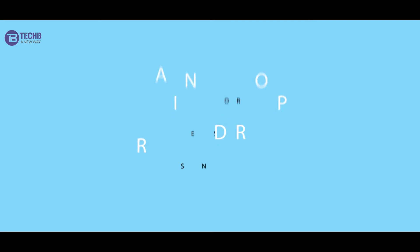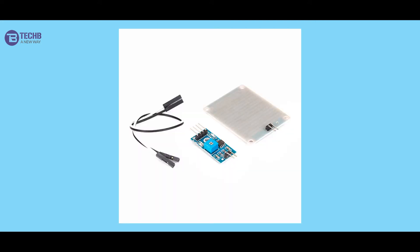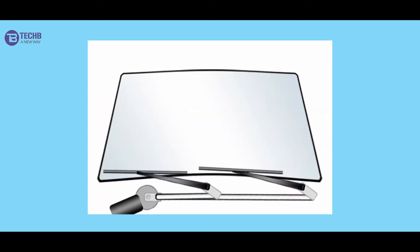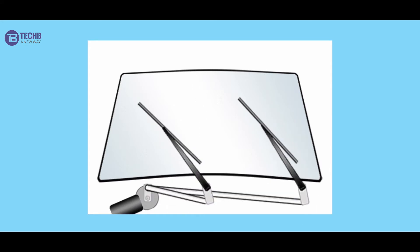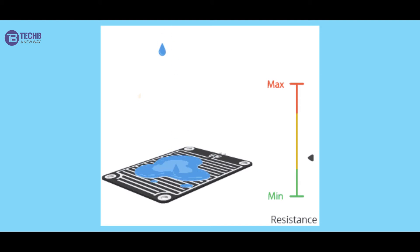Basically, a raindrop sensor is a tool used for sensing rain. It consists of two modules: a rain board that detects the rain, and a control module which compares the analog value and converts it into a digital value. The raindrop sensor can be used in the automobile sector to control windshield wipers automatically, in the agriculture sector, and also for home automation.